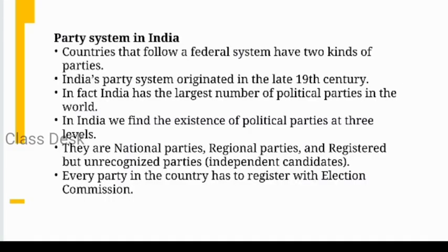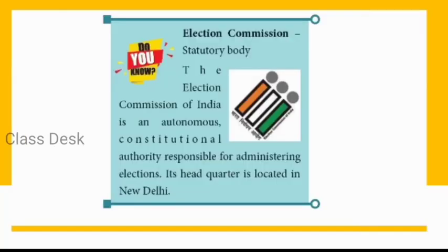Countries that follow a federal system have two kinds of parties. India follows a federal system where the central government makes rules that all states adhere to, but state governments also have their own policies and right to make decisions. India's party system originated in the late 19th century. In fact, India has the largest number of political parties in the world. Political parties in India exist at three tier levels: national parties, regional parties, and registered but unrecognized parties, which are essentially independent candidates.